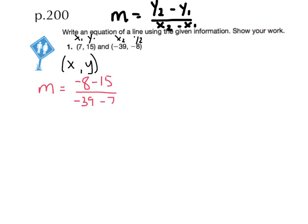With subtracting integers, I'm always going to turn that into an addition problem by adding the opposite. So that's going to become negative 8 plus negative 15, which is negative 23. In the denominator, that will give me negative 39 plus negative 7, which is negative 46. Now, both of these are divisible by 23. If I divide both by 23, I'm going to get negative 1 over negative 2. But let's not forget that a negative divided by a negative always turns into a positive. That means my slope is 1 half.